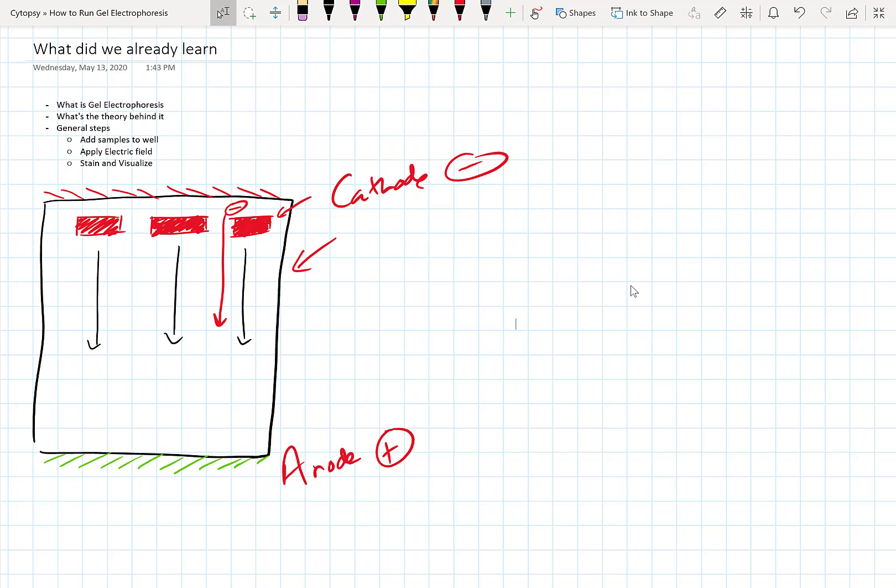In general, here is what we talked about. We talked about adding samples to wells, applying an electric field, and then staining and visualizing those samples that are inside the gel. And this is the kind of visual we utilize. So here at the top, we've got the samples that we added. And then once we apply the electric field, the sample goes downstream towards the anode if it's a negative sample.